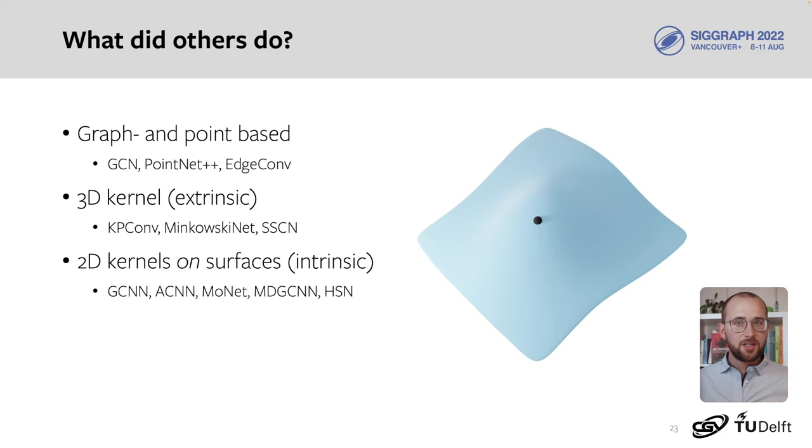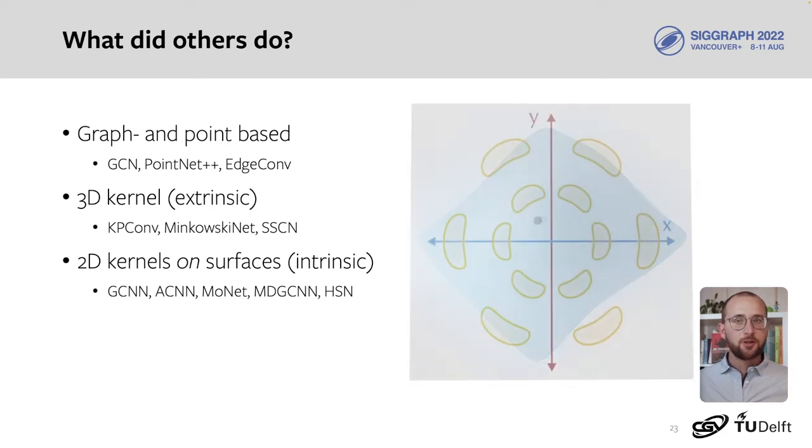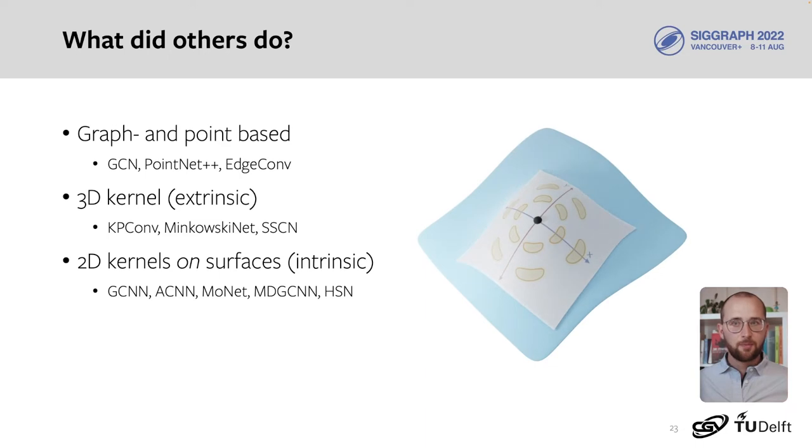Finally, we've seen charting-based approaches. These approaches learn a kernel in 2D and apply it to the surface using the exponential map. Some approaches use rotation equivariant kernels and parallel transport to correct for unaligned coordinate systems. This exponential map used in these approaches is relatively expensive to compute, and most approaches ignore the angular distortion introduced by the mapping.